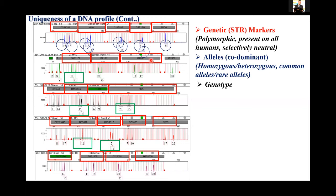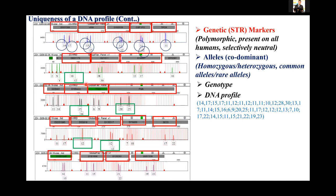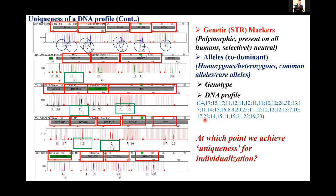When both alleles on an STR marker are put together, this is called a genotype. For example, 14 is one individual allele, 17 is another; when both alleles — say 10 and 12 — are put together, that is the genotype. When all the genotypes of all analyzed STR markers are put together, they are called the DNA profile. So the question comes: at the STR marker level, the allele level, the genotype level, or the DNA profile level — at which level do we achieve uniqueness for the purpose of individualization?